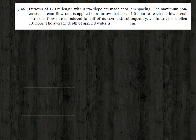The last question: furrows of 120 meter length with 0.5 percent slope are made at 90 centimeter spacing. The maximum non-erosive stream flow rate is applied for one hour until it reaches the lower end, then the flow rate is reduced to half and continued for another one hour. The average depth of applied water is dash centimeter.